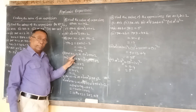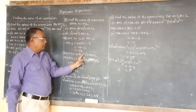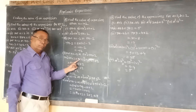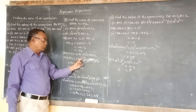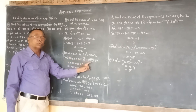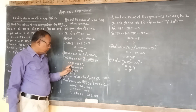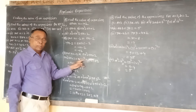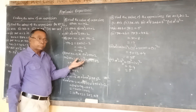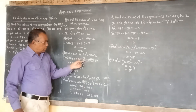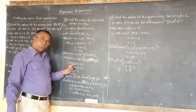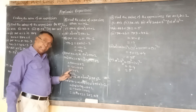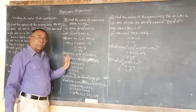Now put n equal to minus 2 in the second expression 5n squared plus 5n plus 2. So it becomes 5 into minus 2 squared, plus 5 into minus 2, plus 2. Here minus 2 squared is 4, so 5 into 4 is 20. For 5 into minus 2, unlike signs give a negative product, so that is minus 10. Therefore 20 minus 10 plus 2 equals 12. So 12 is the value of the second expression.